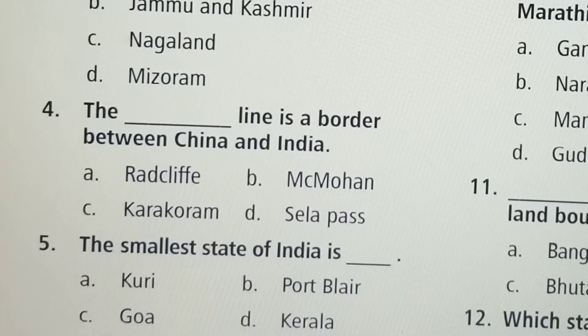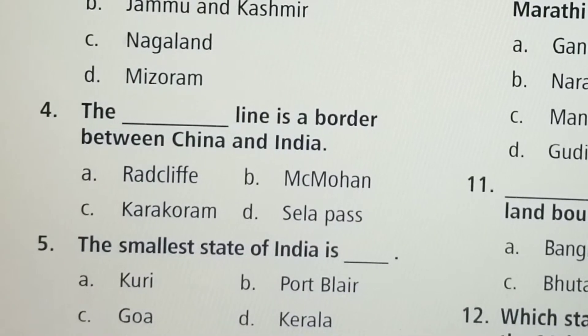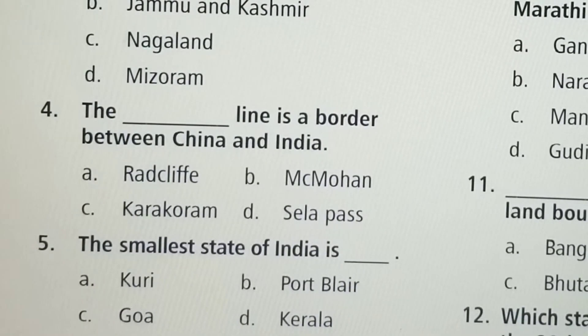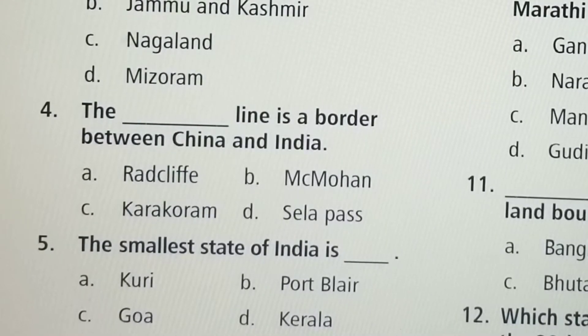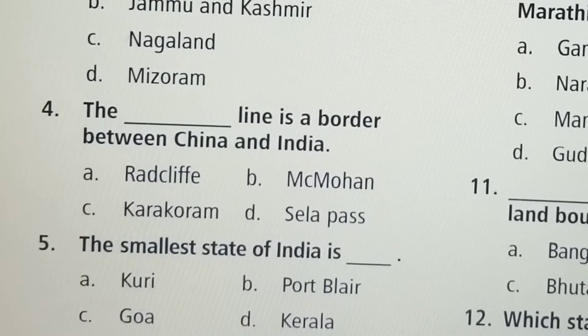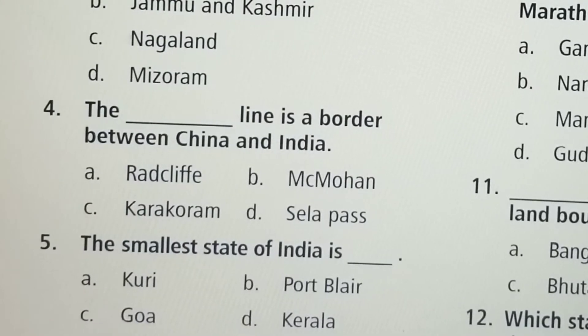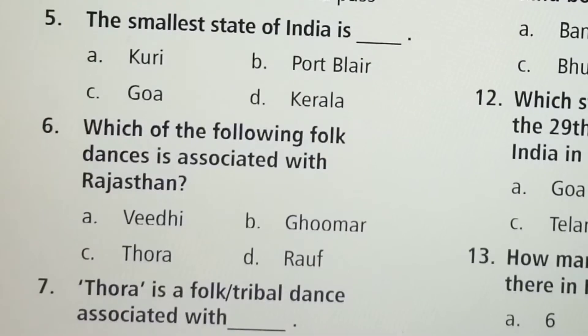Next question: The smallest state of India is — Option A: Kerala, Option C: Goa. Option C, Goa, is the correct answer.